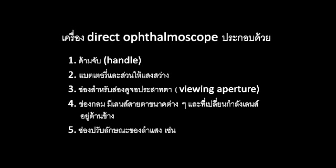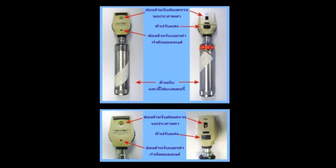Let's take a look at the camera — Direct Ophthalmoscope. ช่องกลมมีเลนสายตาขนาดต่างๆ และที่เปลี่ยนกำลังเลนอยู่ด้านข้าง (The circular aperture has eyepiece lenses of various sizes, and the lens power changer is located on the side.)